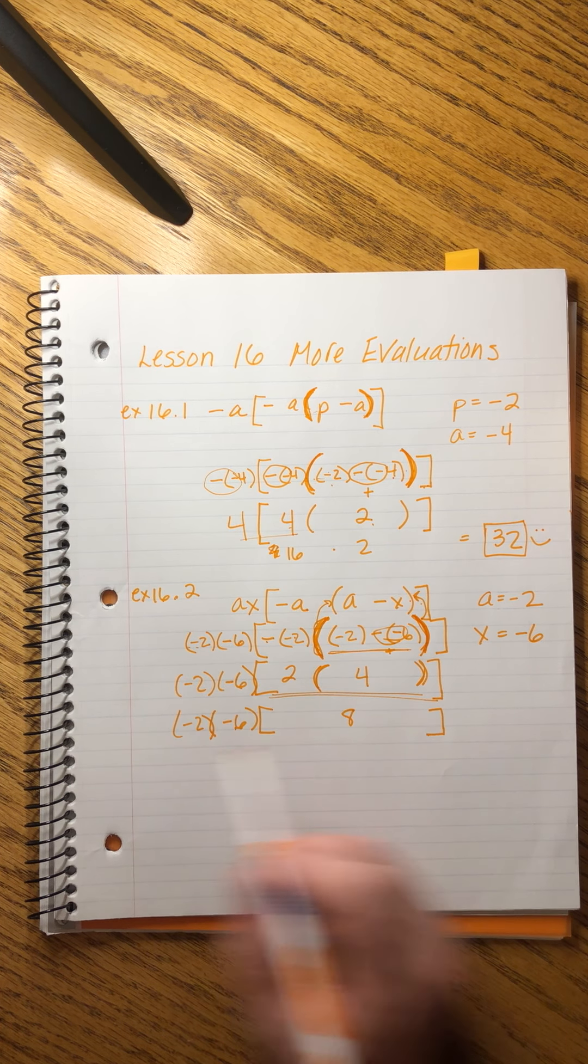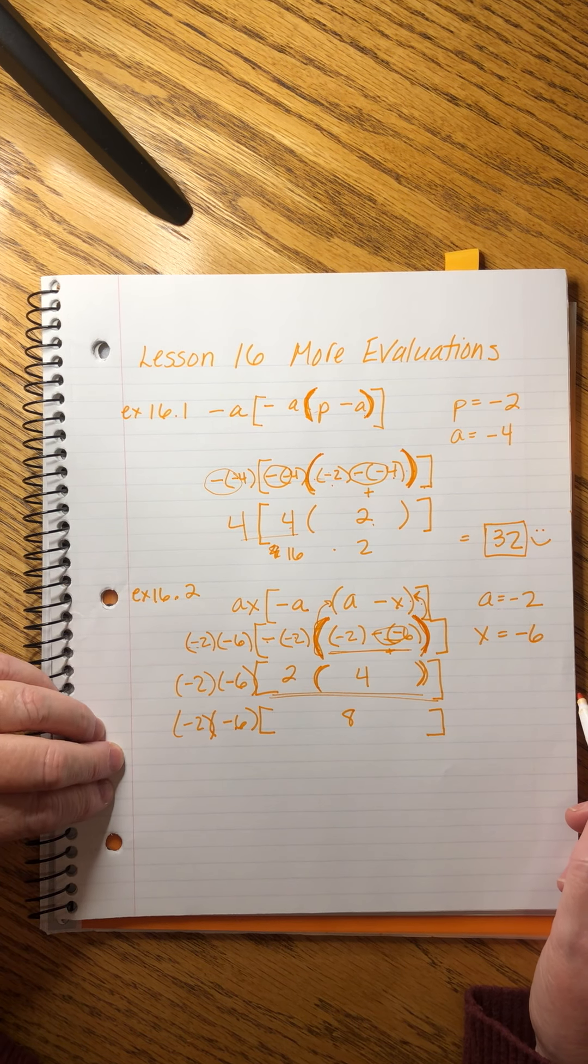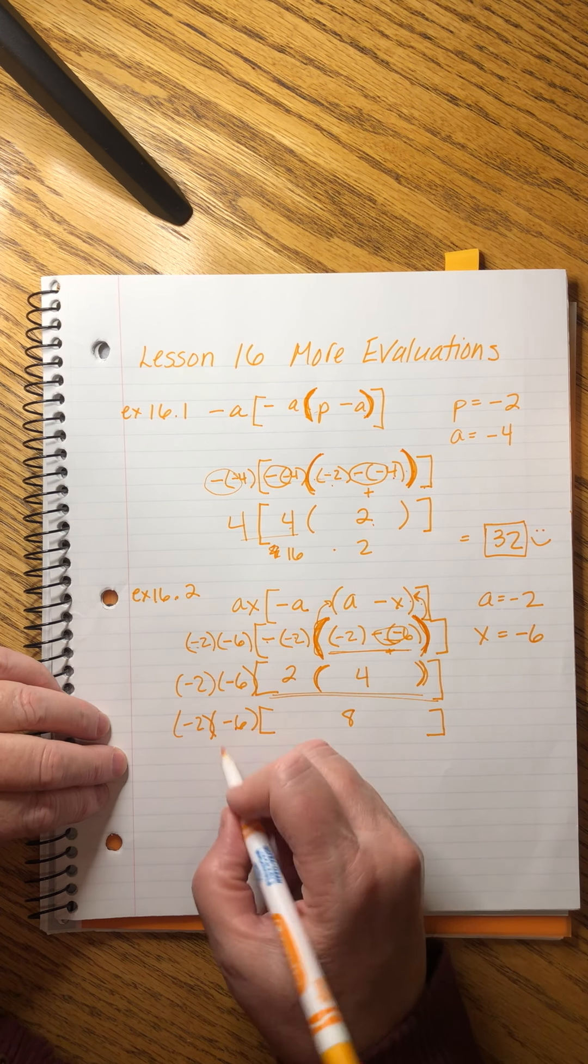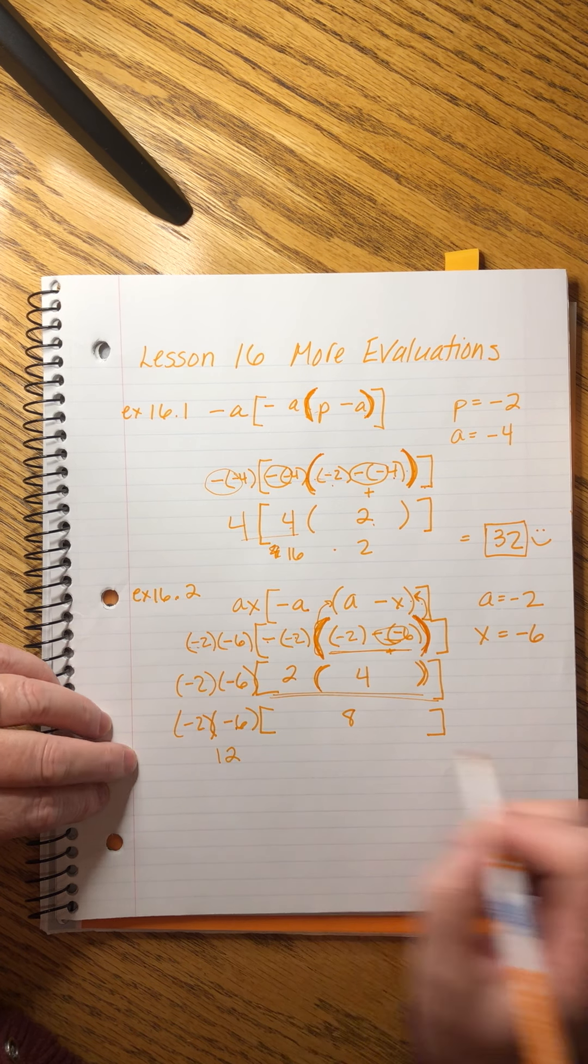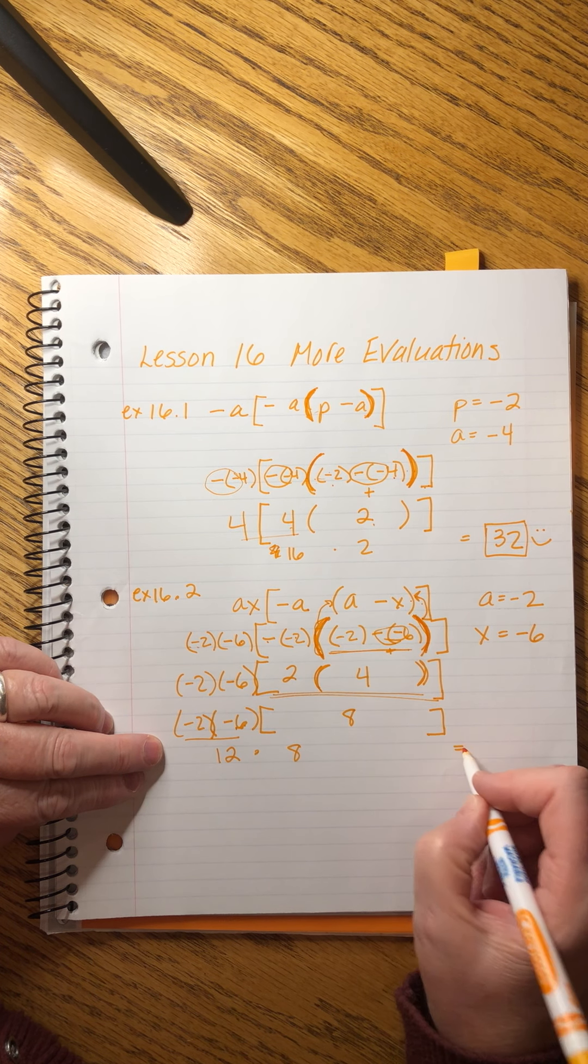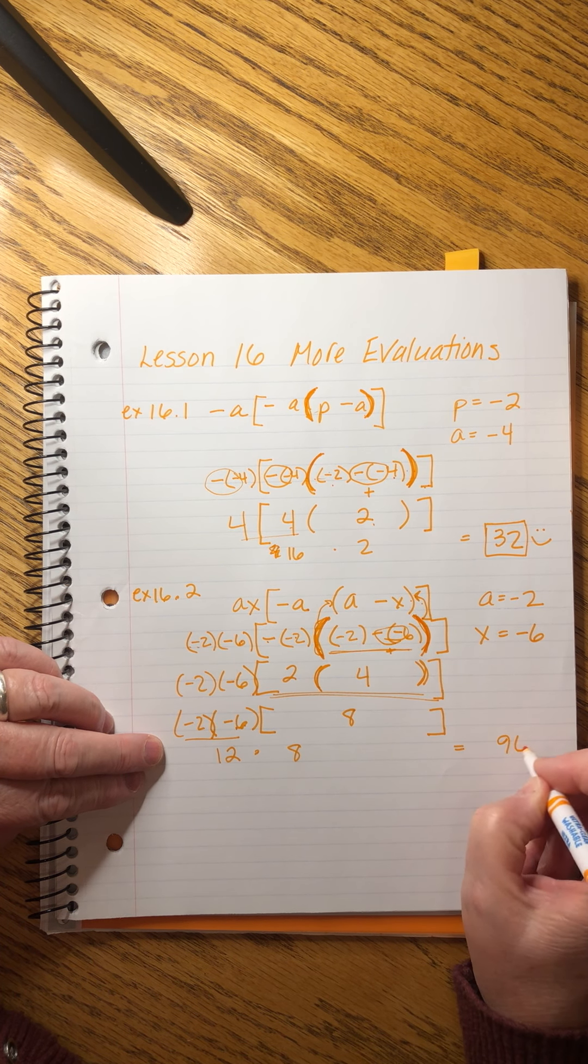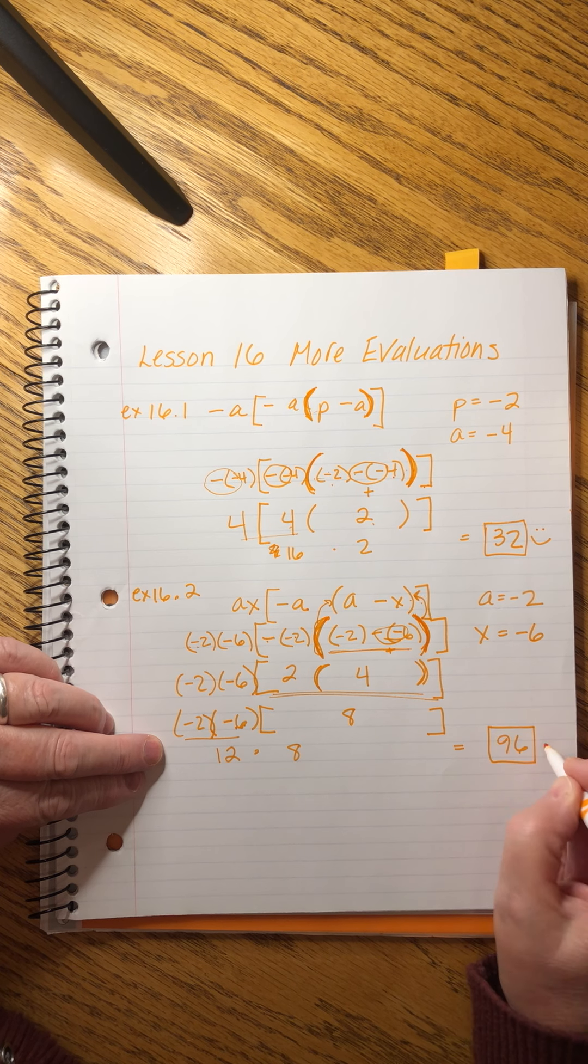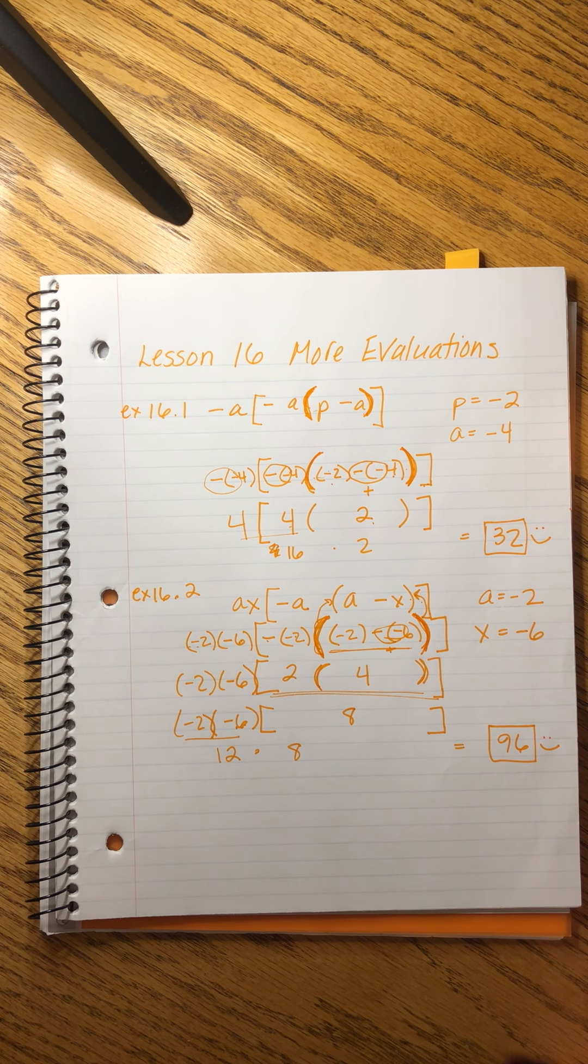And now we can just multiply straight through because we are, we're just multiplying order. Doesn't matter. Positive 12 is those two times eight equals, that is what? 96. Good answer. Yay.